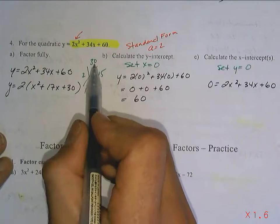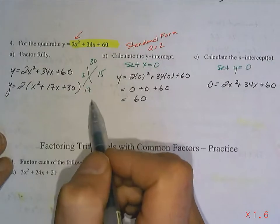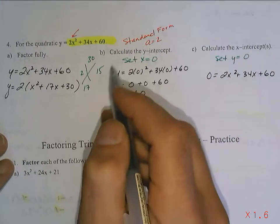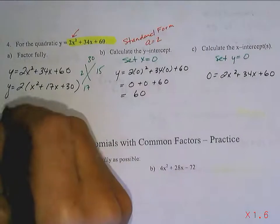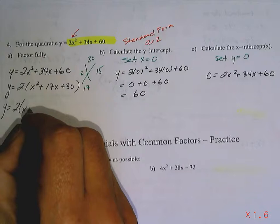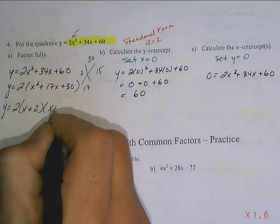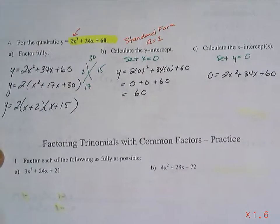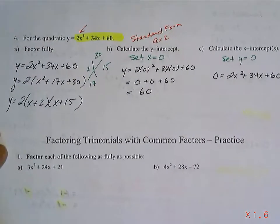They need to multiply to give a positive 30. So, they're both positive or they're both negative. They add to give positive, so they're both positive. So, lo and behold, that's a great saying, isn't it? Lo and behold. We factored it,